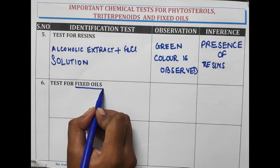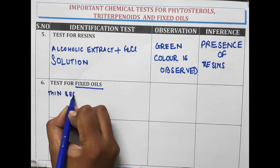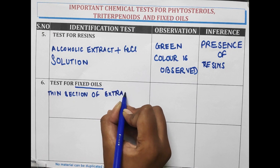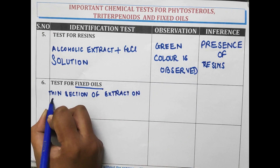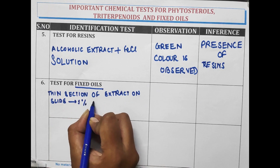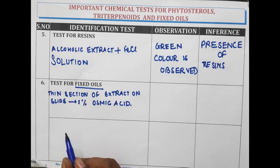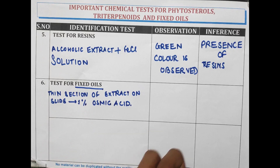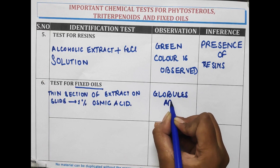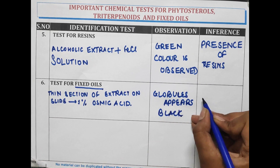Test for fixed oils: a thin section of extract is taken on a slide. 1% Osmic acid is added on the slide and this is observed under a microscope after 1 minute. The globules appear black in colour, indicating the presence of fixed oil.